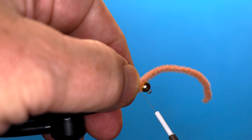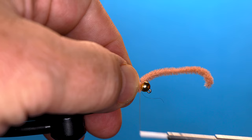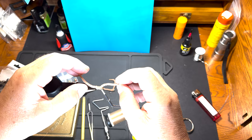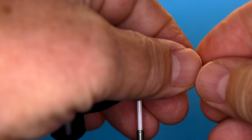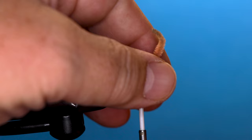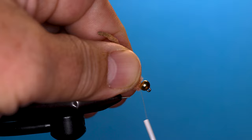I'm gonna make that about the same length, so I'm gonna cut it here and hit it with the lighter for my taper. Build up a little bit of thread. We'll roll a whip finish.